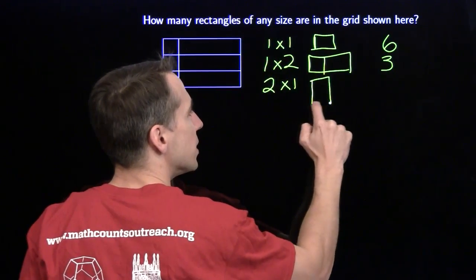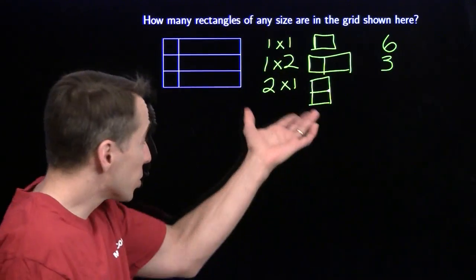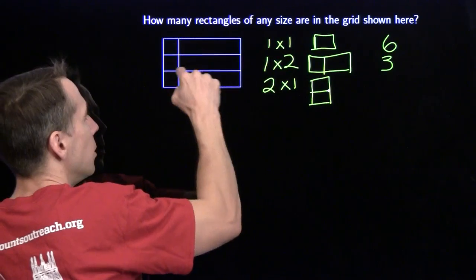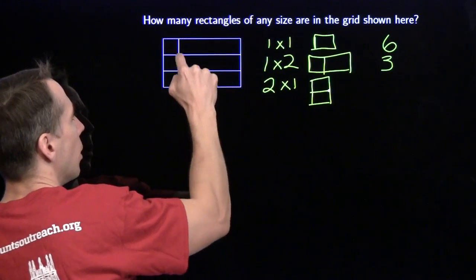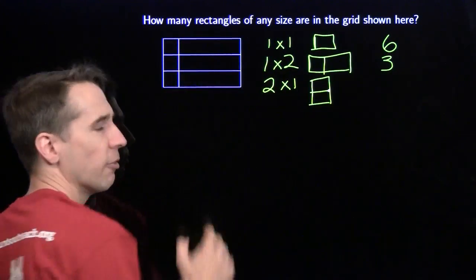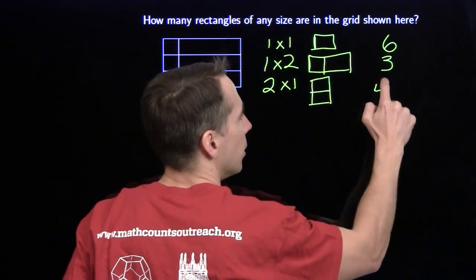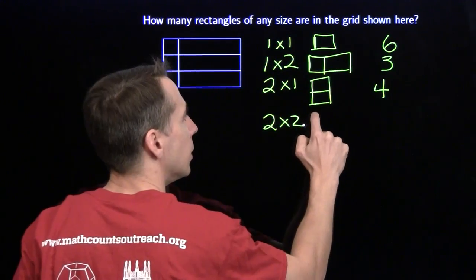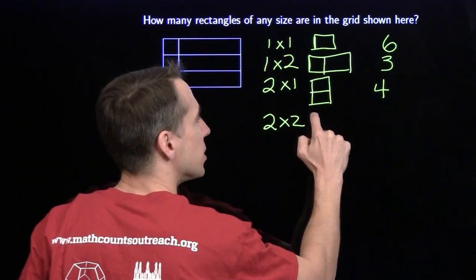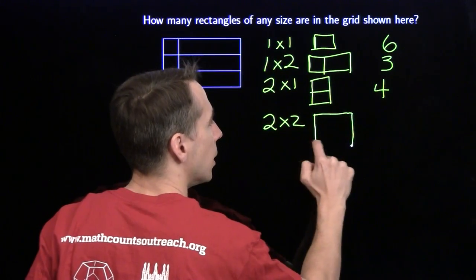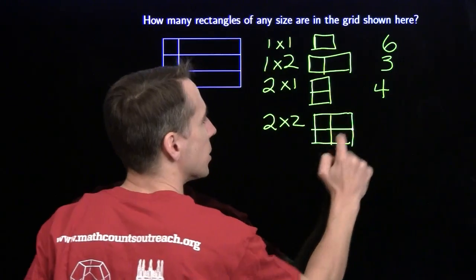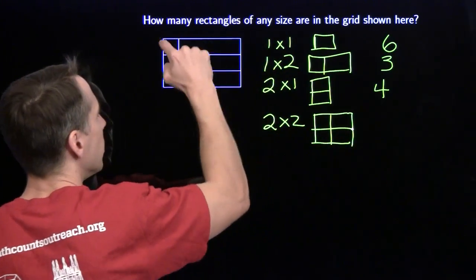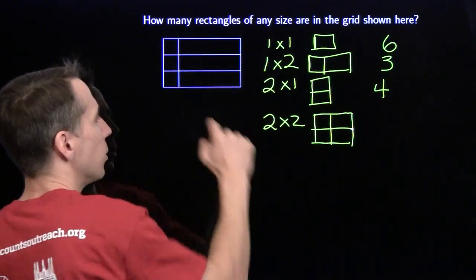Now we're going to look at the ones that take up two rows. First, two rows and one column — there's one, two, three, four of those. And of course we go on to the two-by-twos — still two rows, now two columns. We've got one right here and one right here, so we've got two of those.